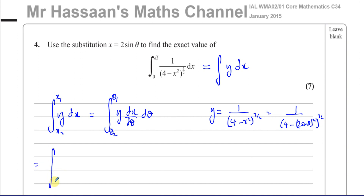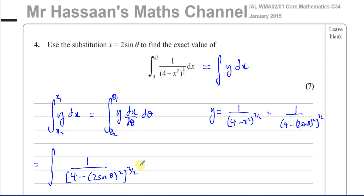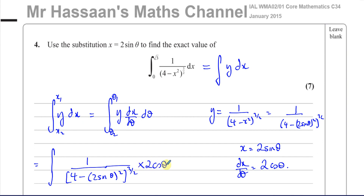So the integral becomes: the y part is 1 over [4 minus (2sinθ)²]^(3/2). That bracket simplifies to 4 minus 4sin²θ, to the power of 3/2. Now I need the dx/dθ part. Since x = 2sinθ, differentiating gives dx/dθ = 2cosθ. So I multiply by 2cosθ dθ.